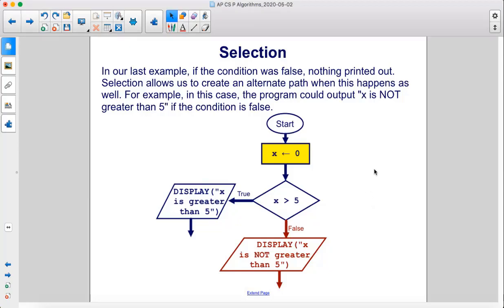In our last example, if the condition was false, nothing printed out. Selection allows us to create an alternate path when this happens as well. For example, in this case, the program could output x is not greater than 5 if the condition is false.